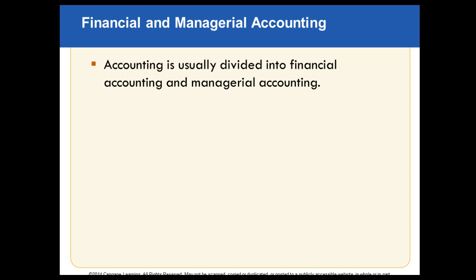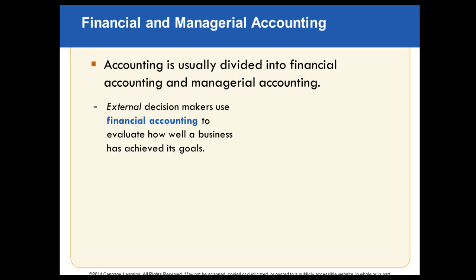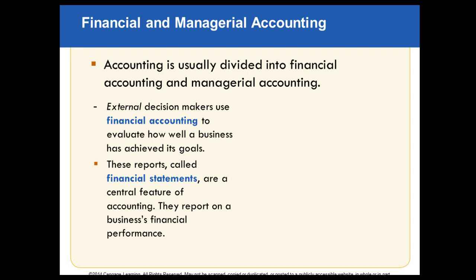In accounting, we have two branches: financial and managerial. Financial accounting relates to external users to evaluate how a business has achieved its goals. Financial accounting is us communicating information about Keith's scrap metal to banks, investors, or the city for permits — it's outside the company. He's trying to portray a picture of his company to outsiders. That's financial accounting — when we use accounting to convey information to external users outside of the company.